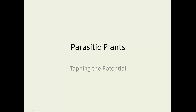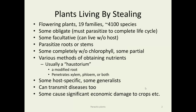Parasitic plants are some of the most interesting plants out there. They tap the potential of their fellow plants to get by in life — in other words, living by stealing. In general, they're flowering plants covering 19 families, a wide range of taxonomic categories, and an estimated 4,100 species of plants are actually parasitic.